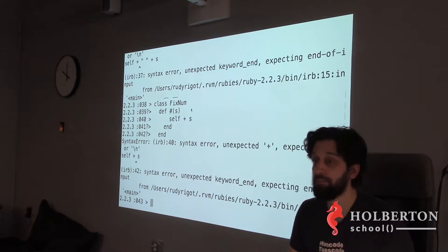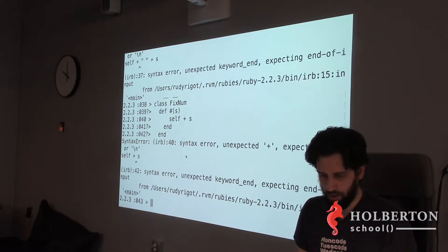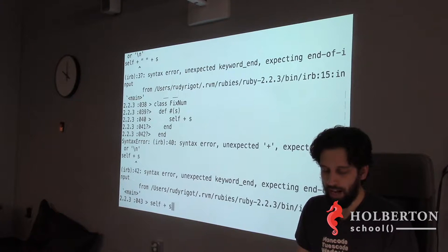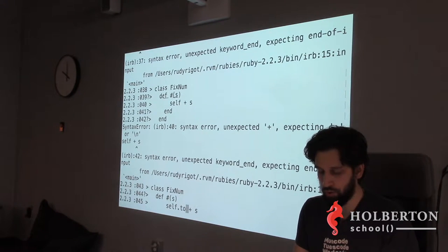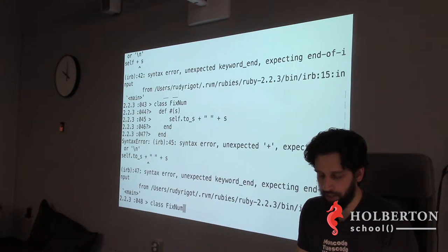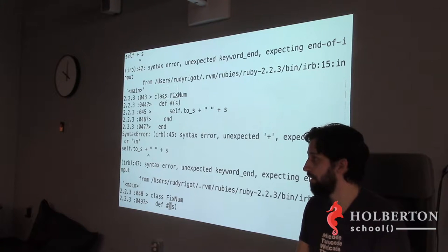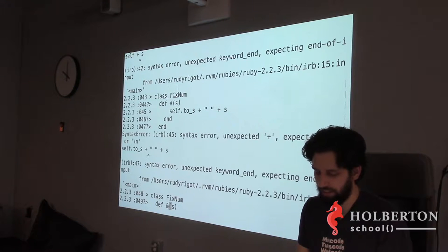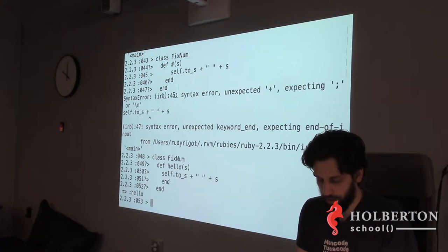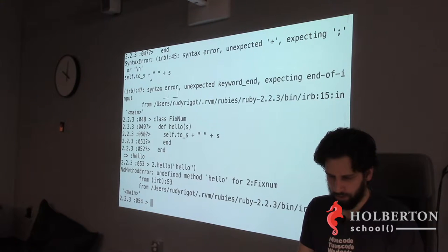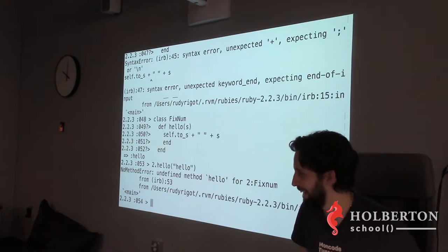On integers you can do `2.hello` if you define the `hello` method on the Integer/Fixnum class. So something like `2.hello` would return 'hello' — it's a number calling a custom method. You just need to make sure you put the definition in the right class.